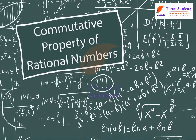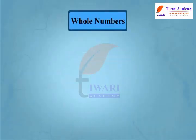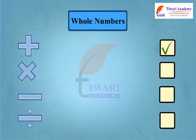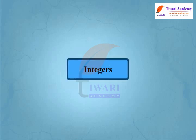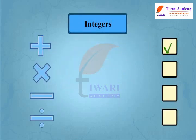Let us learn the commutative property of rational numbers. We know whole numbers are commutative under addition and multiplication, but not under subtraction and division. Similarly, integers are commutative under addition and multiplication, but not under subtraction and division.